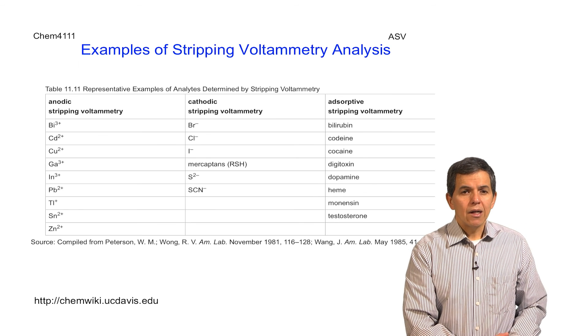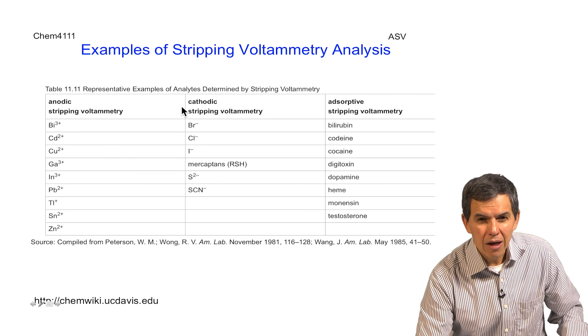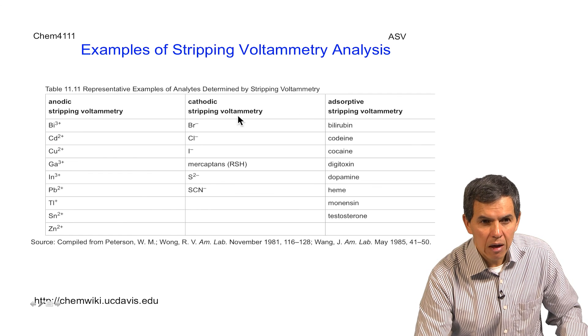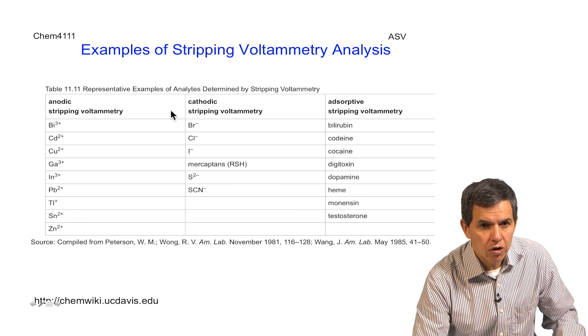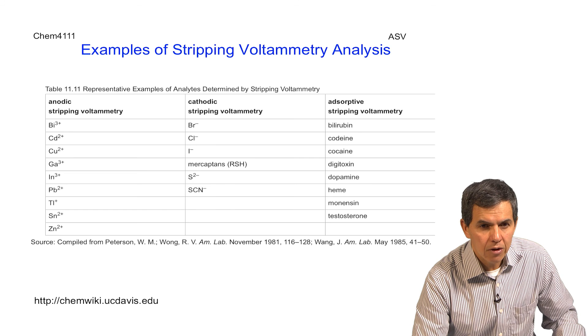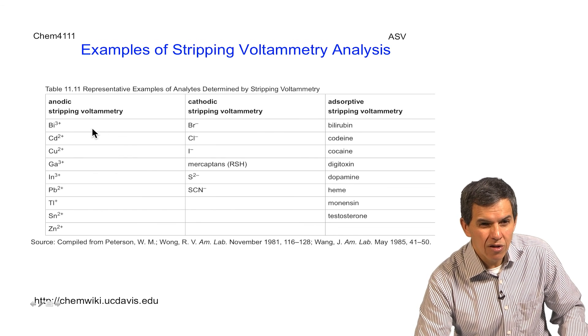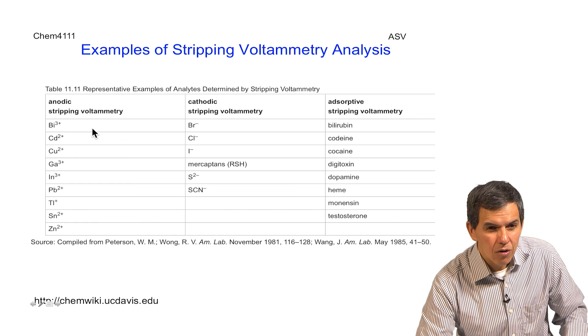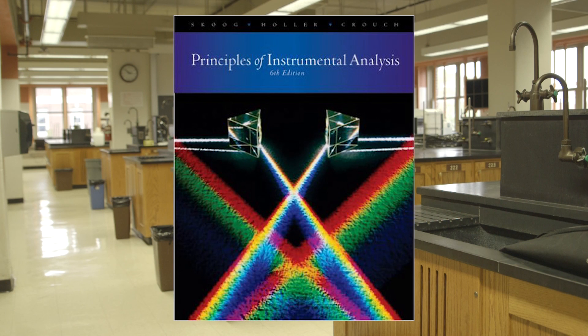Here we have examples of stripping voltammetry analysis: anodic, cathodic, and adsorptive stripping voltammetry. And as we can see here, in all of these, the idea is that we can pre-concentrate the species so that the levels of detection are much lower. In this experiment, we are going to be focusing on cations, particularly those such as copper and lead. For more information on this technique, see the textbook Skoog, Holler and Crouch, Principles of Instrumental Analysis, 6th Edition.